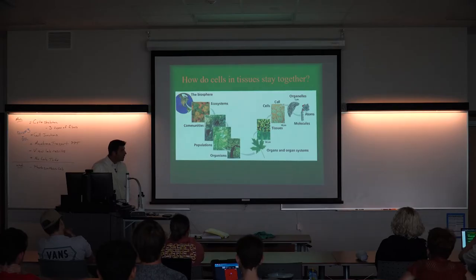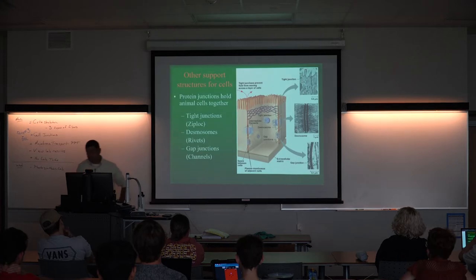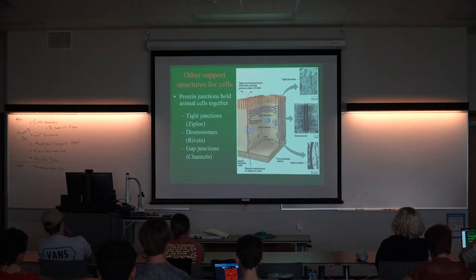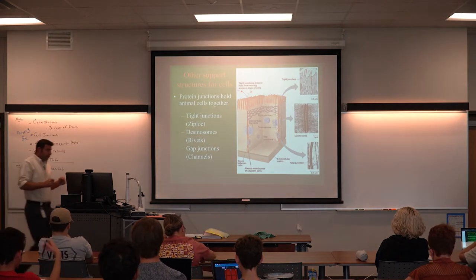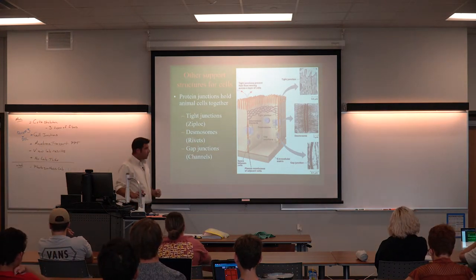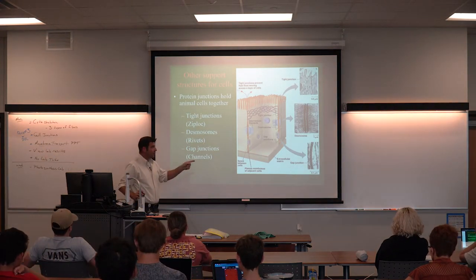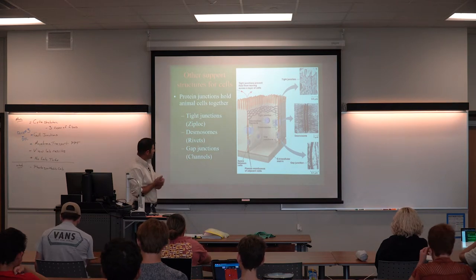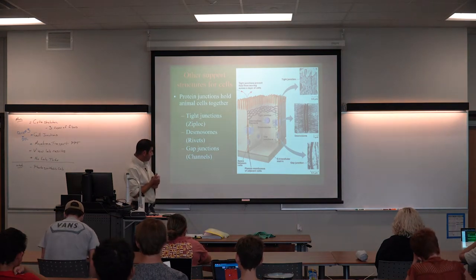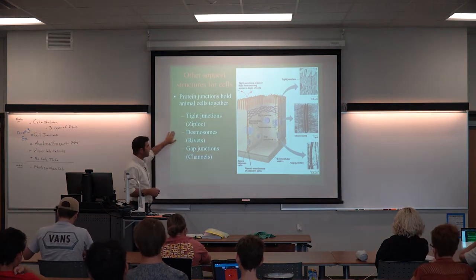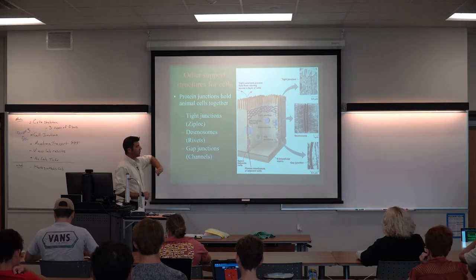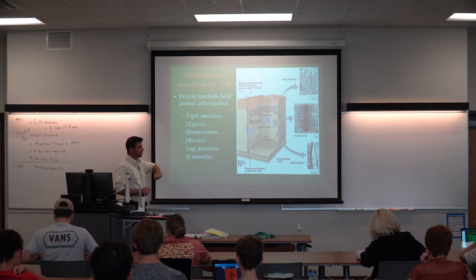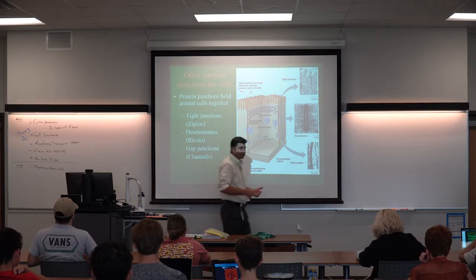Talking about how cells are stitched together — there are three types of cell junctions between animal cells that we need to know. Tight junctions, desmosomes, and gap junctions are the three types of cell connections between animal cells.